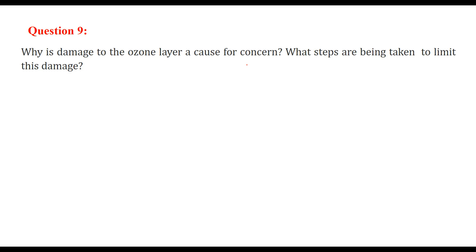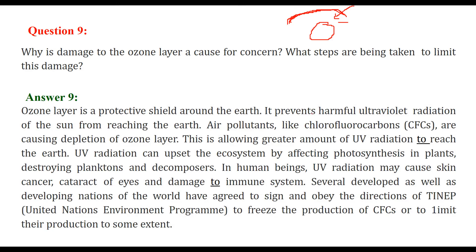Why is damage to the ozone layer a concern for us? Our globe has layers of atmosphere — troposphere, stratosphere, mesosphere — and within these sits the ozone layer. The ozone layer's specific task is to inhibit and allow only a very small amount of ultraviolet rays to pass through. It is a protective shield around the earth that prevents harmful ultraviolet radiation from reaching us. Air pollutants such as CFCs — chlorofluorocarbons — are causing the depletion of the ozone layer.